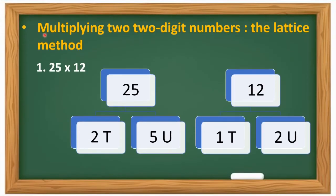Next is multiplying two 2-digit numbers — the lattice method. Our first sum is 25 multiplied by 12. We shall split the numbers into convenient parts and multiply using the lattice method. So let's split 25 as 2 tens and 5 units, that is 20 and 5, and 12 as 1 ten and 2 units, that is 10 and 2.